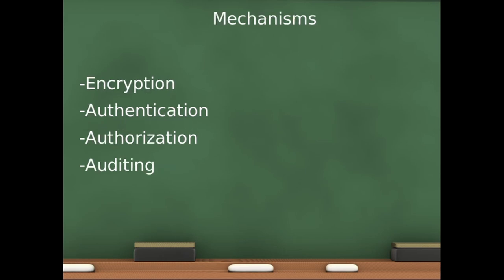We have four mechanisms to help against security threats and to enforce security policy. First, encryption transfers data into something an attacker cannot understand, helping against interception and modification. Authentication verifies the claimed identity of a user to a server or vice versa. After authentication, authorization checks whether the client is permitted to perform the requested action. Auditing logs every action — it won't help against threats directly, but it helps in analyzing a security breach.